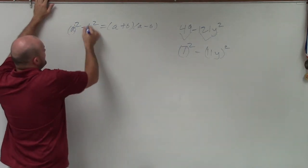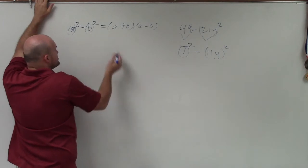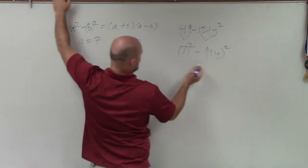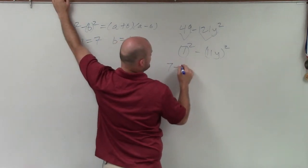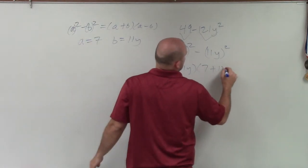So in this case, really, what that is is a term squared minus another term squared. So therefore, I can just say a is equal to 7 and b equals 11y. Therefore, by factoring this, I can say 7 minus 11y times 7 plus 11y.